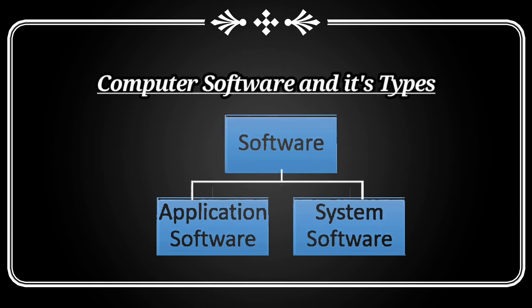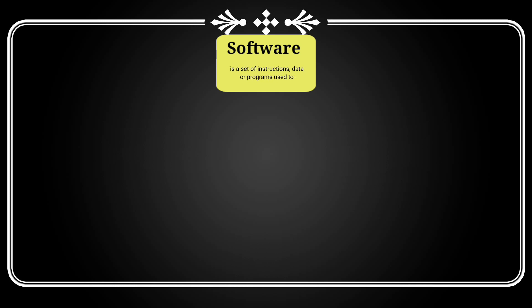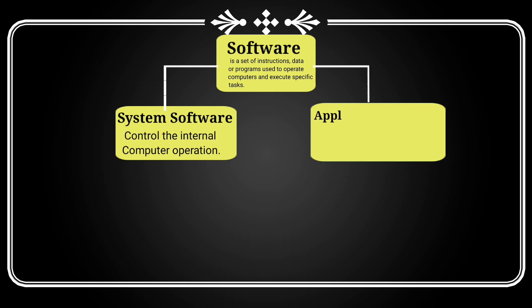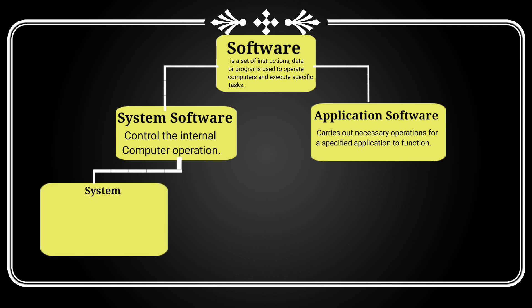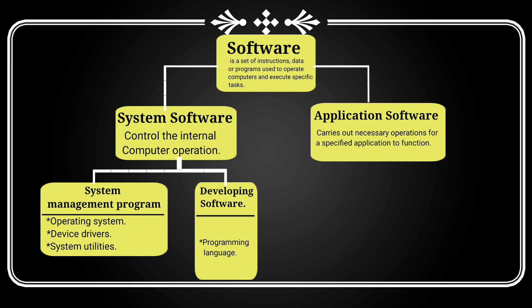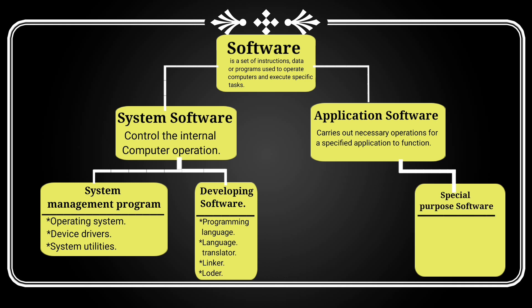Computer software and its different types. Software is a set of instructions, data or programs used to operate computers and execute specific tasks. System software controls the internal computer operations. Application software carries out necessary operations for a specified application to function. System management programs include the operating system, device drivers, and system utilities. Developing software includes programming language, language translator, linker, and loader. Special purpose software includes reservation system, attendance system, billing system, report card generator, etc.